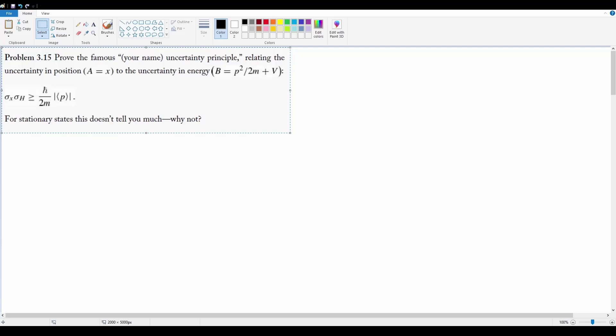Problem 3.15: prove a customized version of the Heisenberg uncertainty principle, but this time instead of position and momentum, we're doing position and energy. We want to show specifically that the uncertainty, or the product of the two uncertainties, is always going to be larger than or equal to h-bar over 2m magnitude of the expectation value of p. Furthermore, apparently for stationary states, this isn't necessarily very helpful. Why?